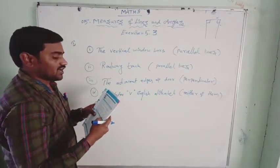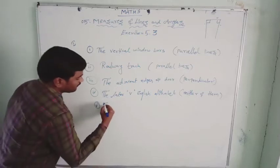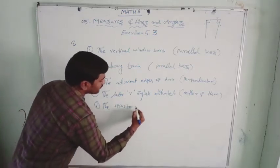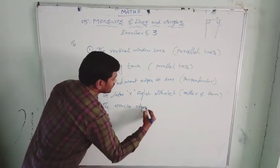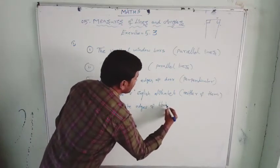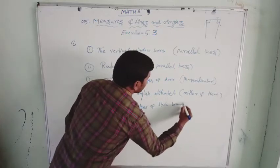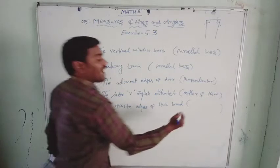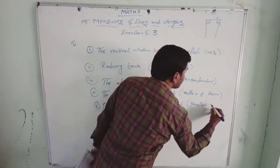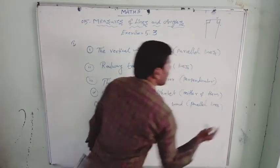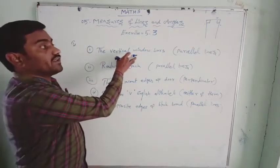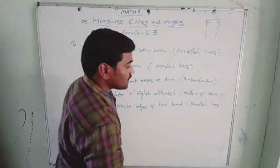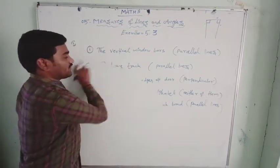The fifth one: the opposite edges of a blackboard. The opposite edges will always be parallel lines. I hope you understood which of the given models are in the shape of parallel lines, perpendicular lines, or neither of them.